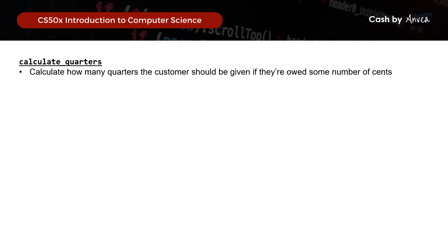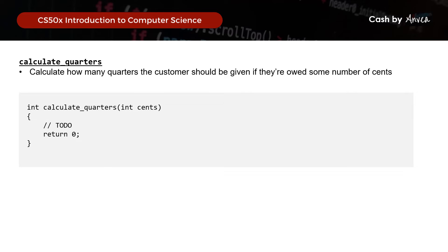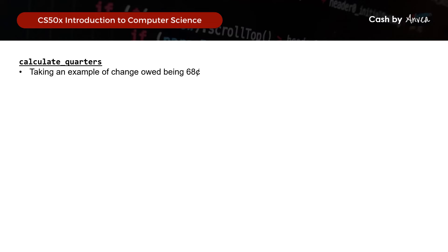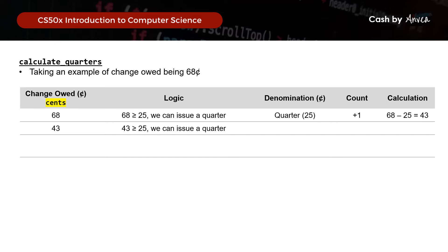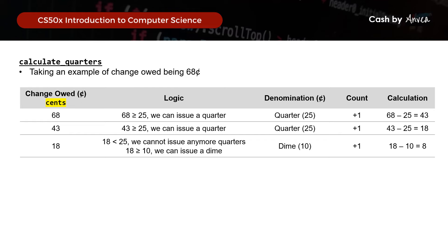Next, we work on calculate_quarters. Let's use $0.68 as the example change owed. Since $0.68 is greater than $0.25, we can issue a quarter and add 1 to the total. The balance becomes $0.68 minus $0.25 equals $0.43. Since $0.43 is still greater than $0.25, we issue another quarter; the balance is now $0.43 minus $0.25 equals $0.18. Since $0.18 is less than $0.25, we stop issuing quarters and move on to dimes.